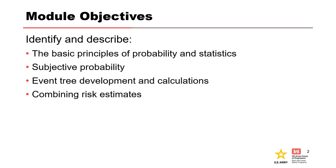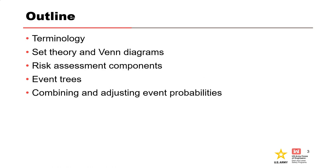After completing this module, participants should be able to identify and describe the basic principles of probability and statistics, subjective probability, event tree development and calculations, and combining risk estimates. This presentation will cover basic terminology, set theory, and Venn diagrams before getting into the basic components of a risk assessment, event trees, and combining event probabilities.